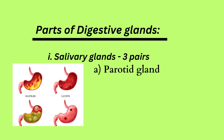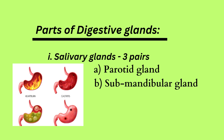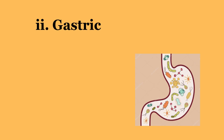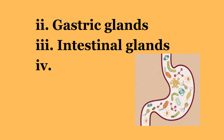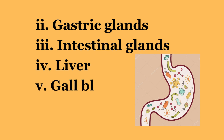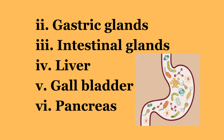Parts of Digestive Glands: Salivary Glands — 3 Pairs: A. Parotid Gland, B. Submandibular Gland, C. Sublingual Gland. Also includes Gastric Glands, Intestinal Glands, Liver, Gallbladder, and Pancreas.